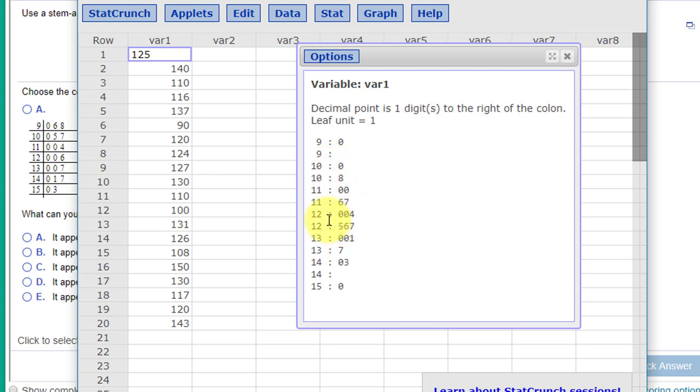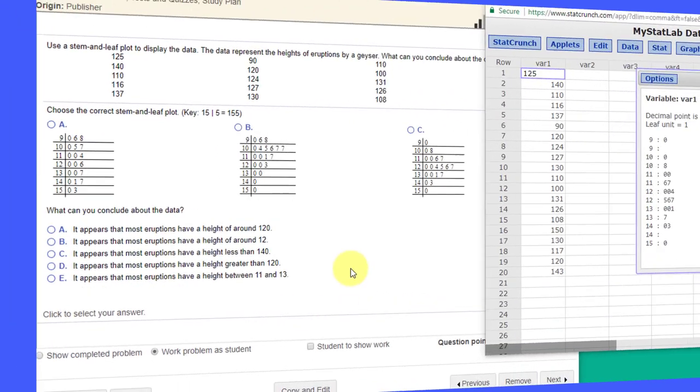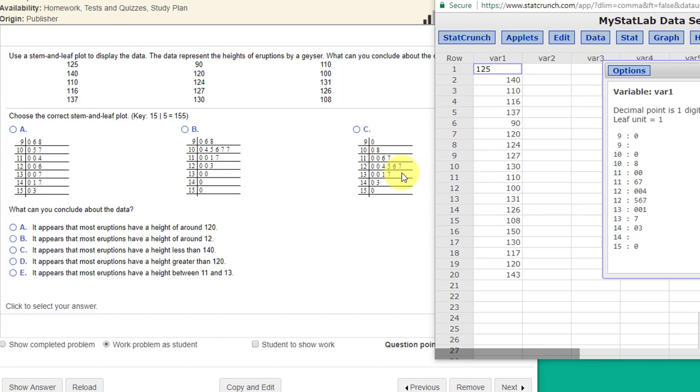to twelve, the entire twelve stem would be zero, zero, four, five, six, seven. By comparing these, we can see that option C is the correct one. Nine has zero; ten has zero, eight; eleven has zero, zero, six, seven; twelve has zero, zero, four, five, six, seven. So that's our correct option. The second part is